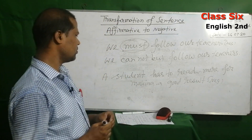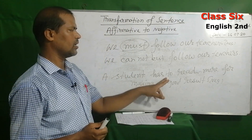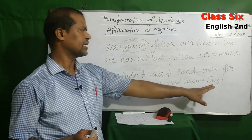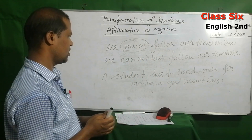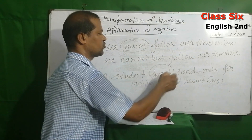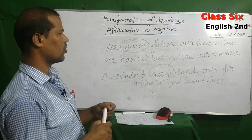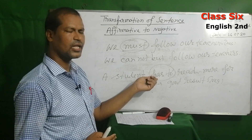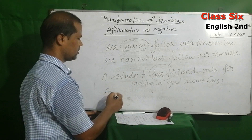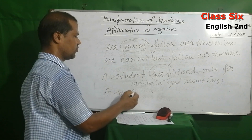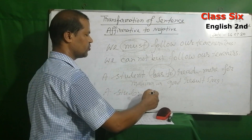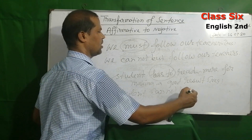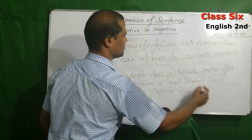Another sentence: 'A student has to read more for making a good result — make it negative.' Here we see the modal word 'has to.' For making the negative form, replace 'has to' with 'cannot but': 'A student cannot but read more for making a good result.'